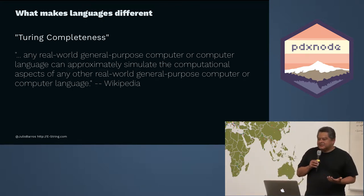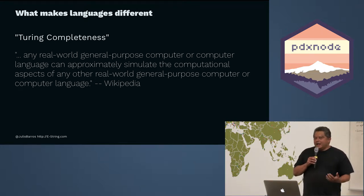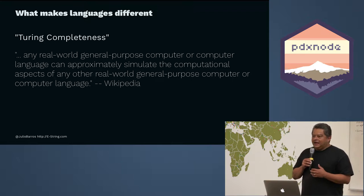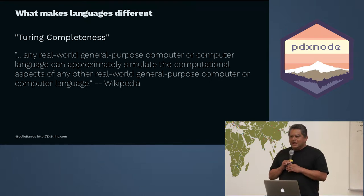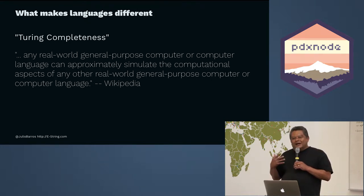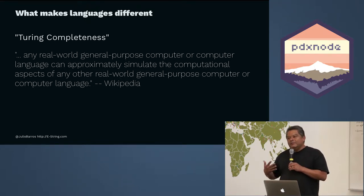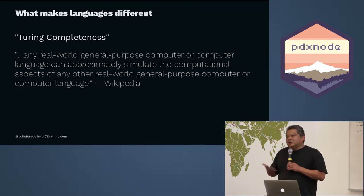But first, what makes languages different? Why would we consider language A versus language B? In a very real sense, languages are kind of equivalent — when you add two numbers together in one language, you can add two numbers together in another. There's this informal concept of Turing completeness, which says that anything you can compute in one language you can compute in another, so at some level there's no difference between them.